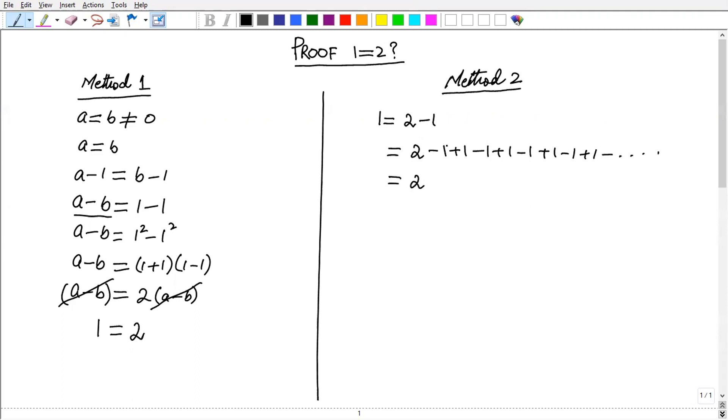Now we collect pairs. Let me write positive first and then negative. So pairs 1 minus 1, plus then again pair 1 minus 1. Then we again select pair 1 minus 1, and so on till infinity.